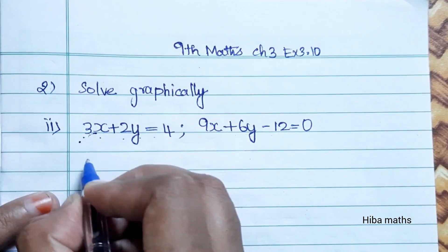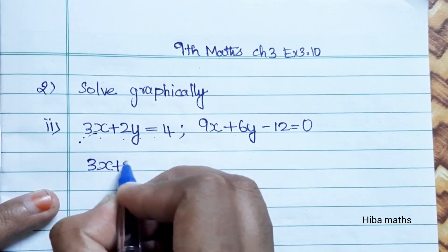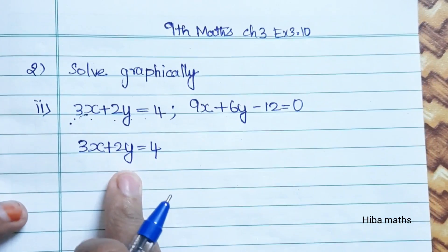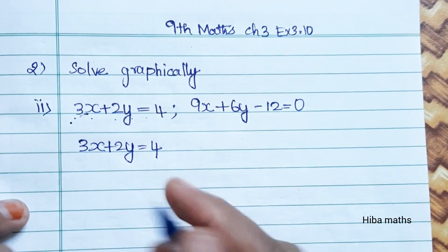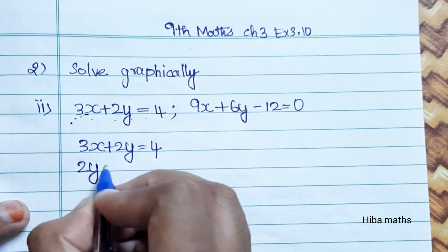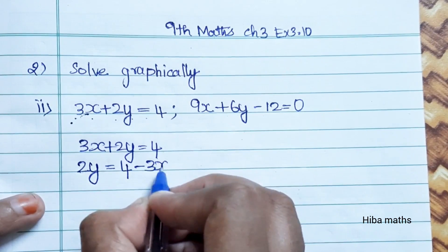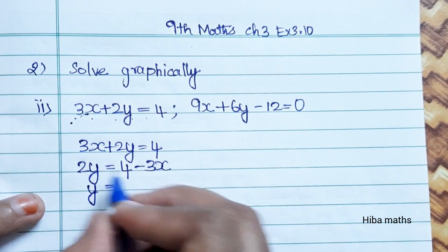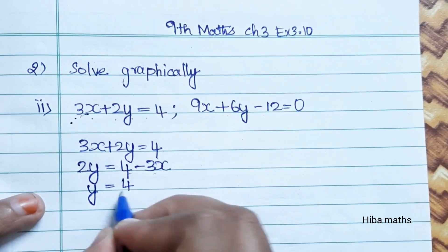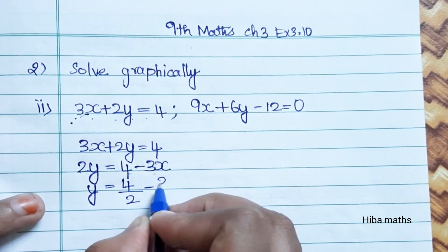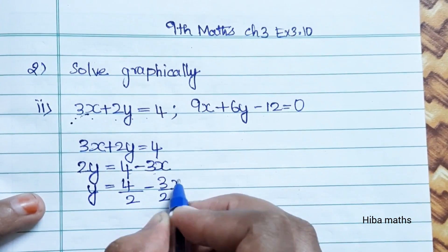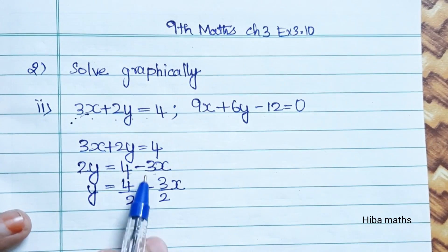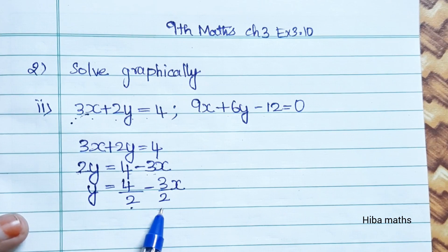So, one by one. From 3x plus 2y is equal to 4, if we use the y value, we move 3x to the other side. So 2y is equal to 4 minus 3x. Now, y is equal to 4 by 2 minus 3 by 2 into x. Multiplication becomes division: 4 by 2 is 2, so y equals 2 minus 3 by 2 into x.